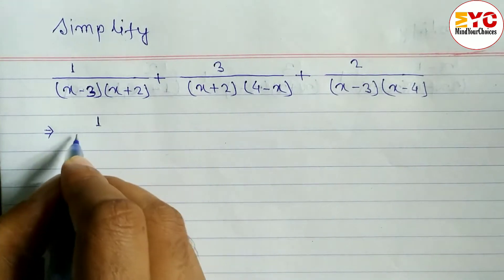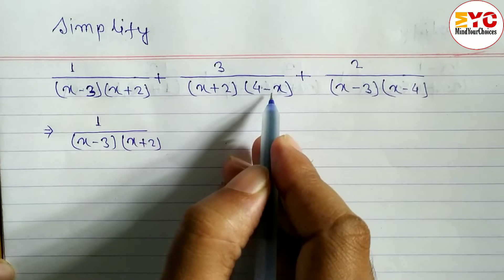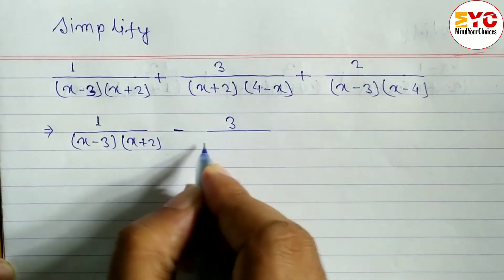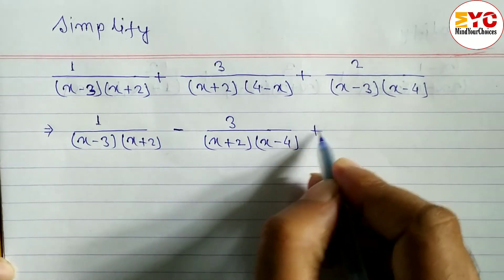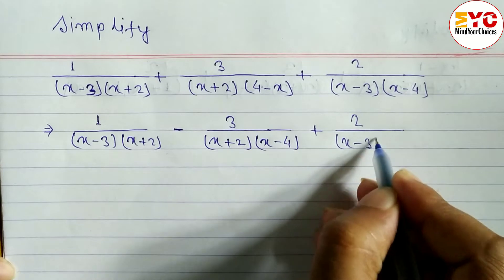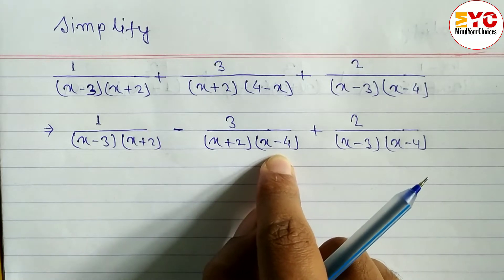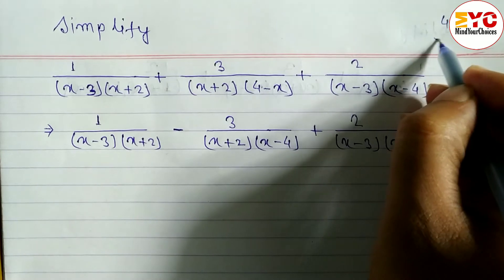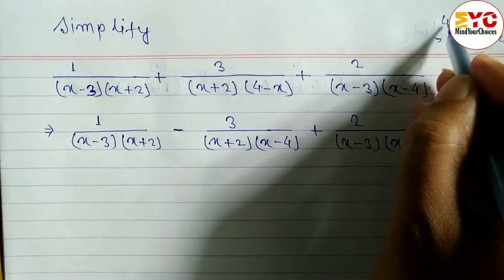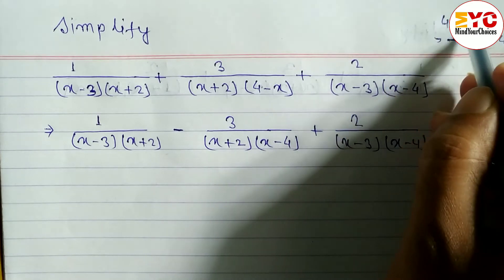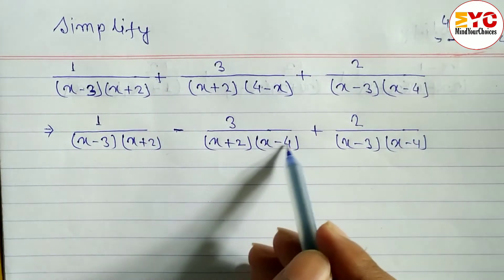We can convert 4 minus x into the form of x minus 4 by taking minus common. We write the same x minus 3 and x plus 2. When you take minus common, this plus will become minus and we can write x plus 2, and we can interchange to get x minus 4. So 4 minus x becomes minus (x minus 4) because minus into minus x gives minus x, and minus times minus 4 gives plus 4, so interchanging gives x minus 4.